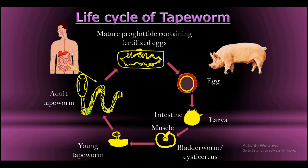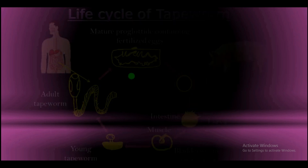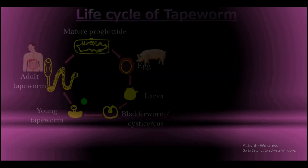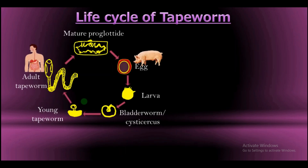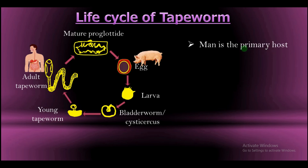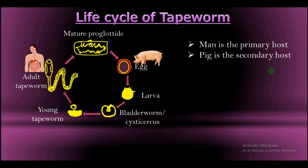The important facts we must know from the life cycle of tapeworm: since the life cycle of the tapeworm starts in man, man is therefore the primary host, while the pig is the secondary host, because the life cycle continues later in the body of the pig.